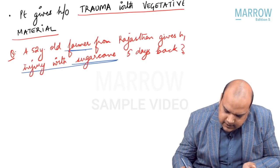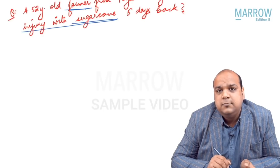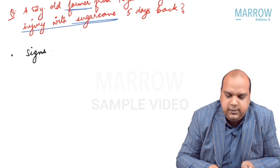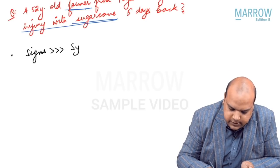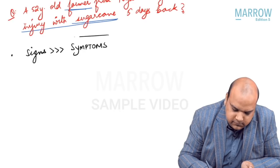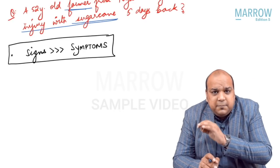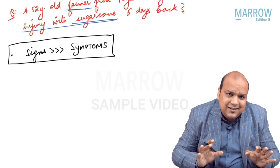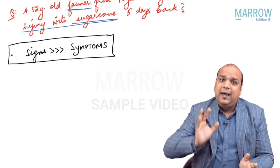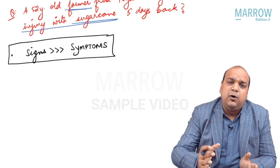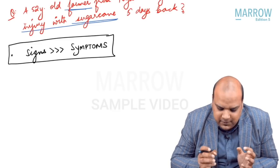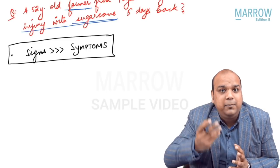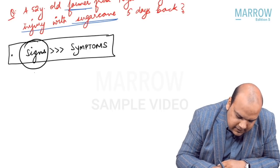Very importantly, the signs in cases of fungal corneal ulcer are out of proportion to the symptoms. The patient will say they don't have a lot of pain, there will be minimal redness and minimal irritation, but when you examine you will see a full-blown ulcer already formed. The patient is coming because they can see some kind of wound or ulcer being formed in the eye.